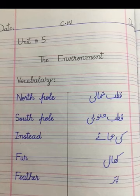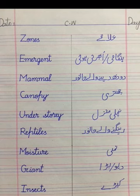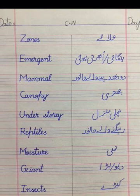Now let's go over the vocabulary meanings: Zones — Emergent means rising or coming up. Mammal — a milk-giving animal (doodh dene wala janwar). Canopy — छतरी (umbrella/cover). Understory — lower level (nichli manzil). Reptiles — crawling animals (ringne wale janwar). Moisture — nami (humidity). Giant — very large.